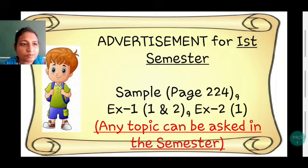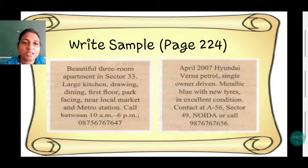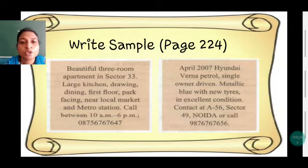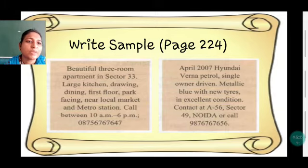The sample ones here show an ad for a flat: 'Beautiful three-room apartment in Sector 33, large kitchen, drawing, dining, first floor, park-facing, near local market and metro station — call between so and so.' See how short and to the point it is written. Then there is an ad for a vehicle: 'April 2007 Hyundai Verna Petrol, single owner driven, metallic blue with new tires in excellent condition.' This is an ad for an old vehicle.